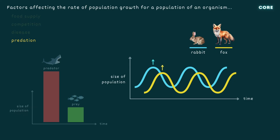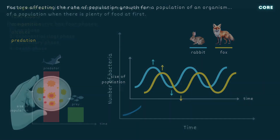However, as fox numbers rise, so does rate of predation, meaning eventually rabbit numbers start to decline. This causes fox numbers to go down as well, which allows the rabbit population to grow again, and so on.